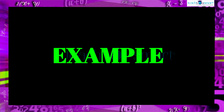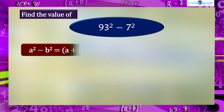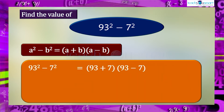Let's take another example. Find the value of 93²-7². Using the identity a²-b² = (a+b)(a-b): 93²-7² can be written as (93+7)(93-7) = 100×86 = 8600.